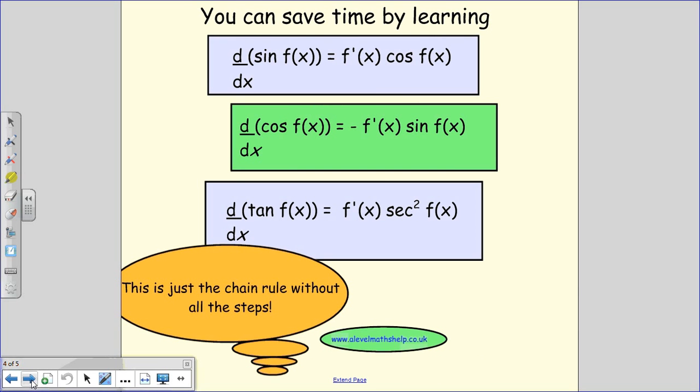So actually you can save time and not need to go through all the substituting in of u and using the chain rule by remembering this. If you differentiate sine of a function of x, then you get cos of the same function of x and then in front of it, it's times by the differential of whatever that function of x was.